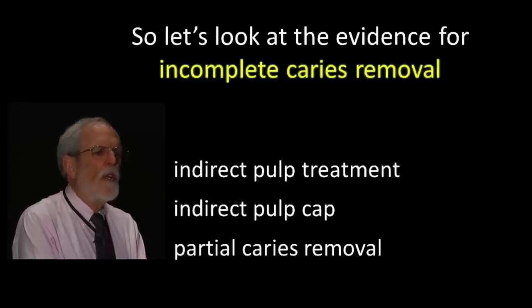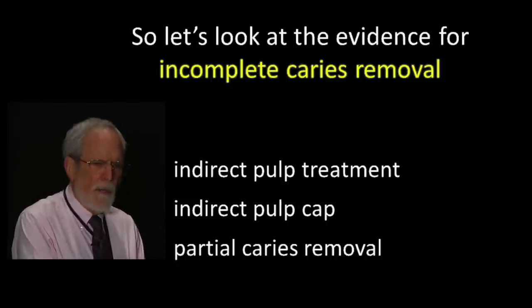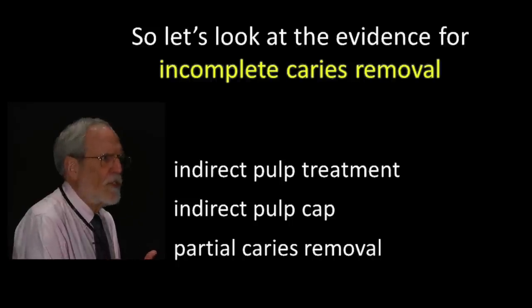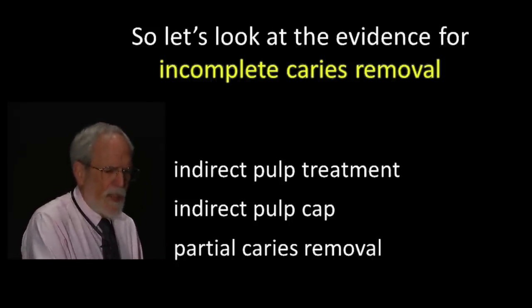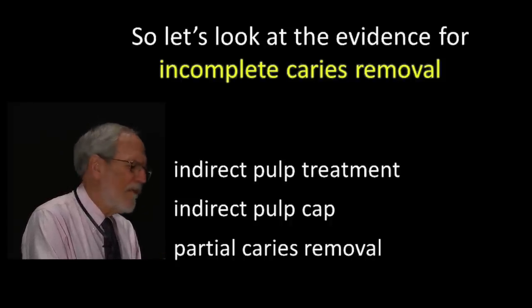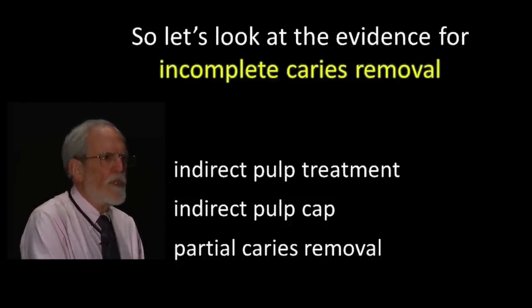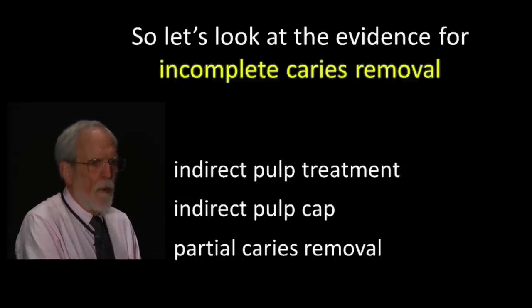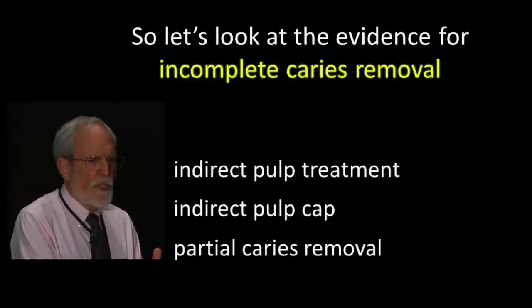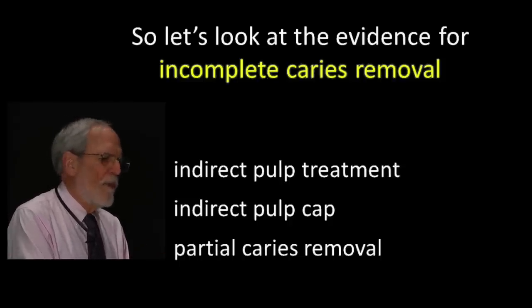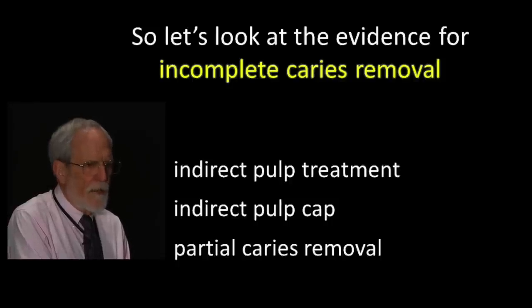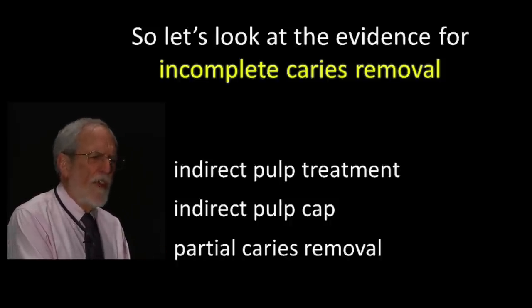You then place a liner if you care to and put on a permanent restoration — that's the end of the procedure, no re-entry needed. The second method, called stepwise or indirect pulp cap, does the same initial preparation but places a temporary restoration. You return between one month and twelve months later, remove the carious dentin that was left, hoping the pulp has laid down a bridge of secondary dentin to protect against exposure during excavation. Then place a liner and a permanent restoration. One method leaves caries in permanently; the other leaves it for a matter of months.